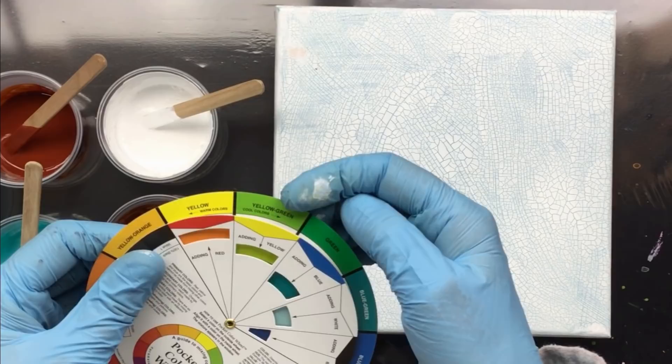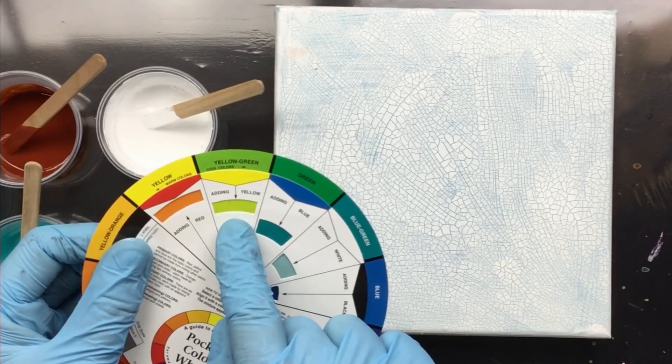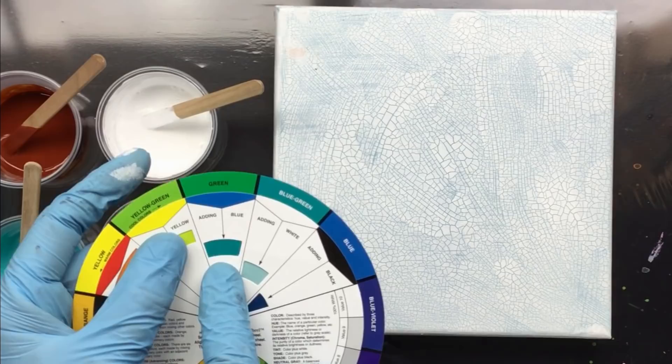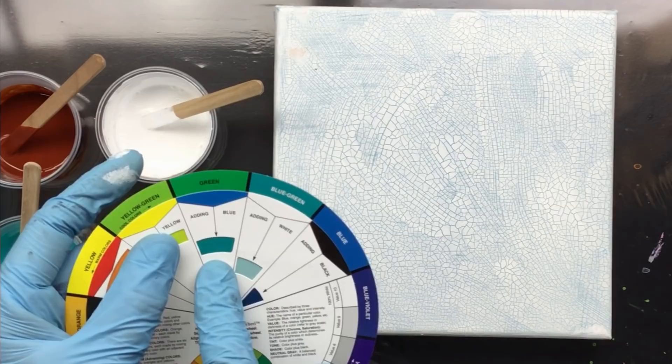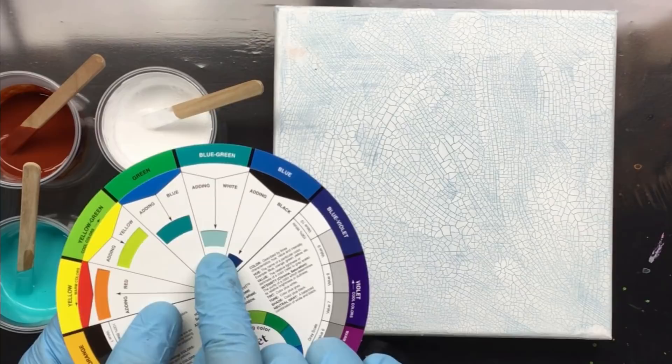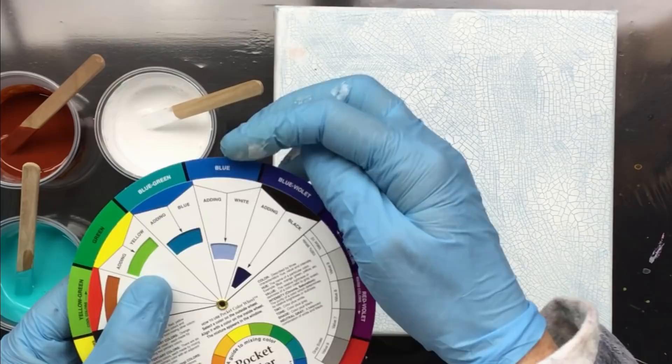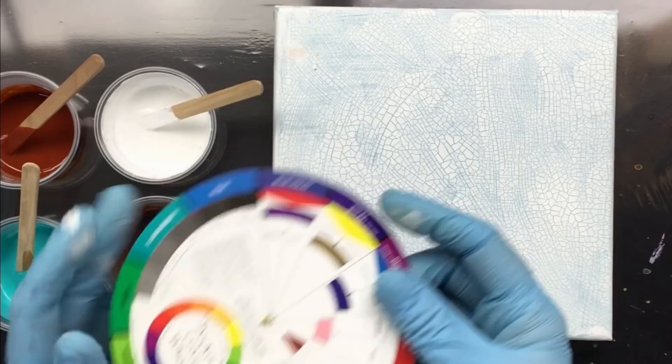If you have yellow green and add yellow, you get a bright yellow green. Here you have green, you add blue, this is the color you're going to get—sort of a really intense turquoise, teal kind of color. If you add white to blue green, this is what you get. Blue adding white, you get that. That's how the wheel works.